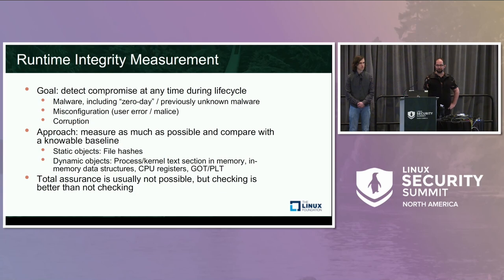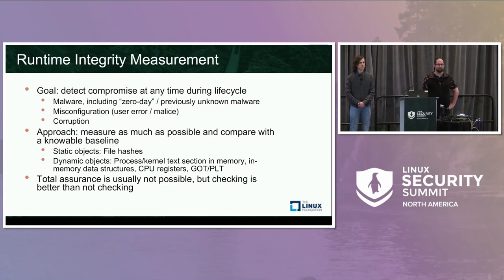We also look at CPU registers, syscall tables, GOT/PLT — all of these things used by kernels or processes that, if corrupted or modified, could be changing the behavior of that software. Now, total assurance is generally not possible — you're going to run into the halting problem and Rice's theorem pretty quickly if you try to totally model everything a system does. But generally, for a lot of system software, we can actually get a pretty good degree of assurance. The more things we check, the better our assurance becomes, because that's one less place malware can hide.